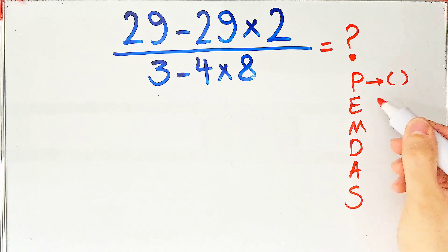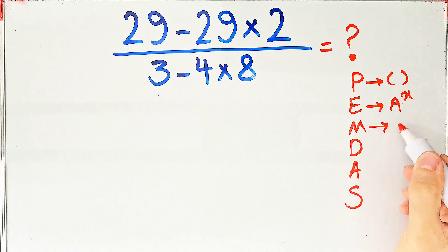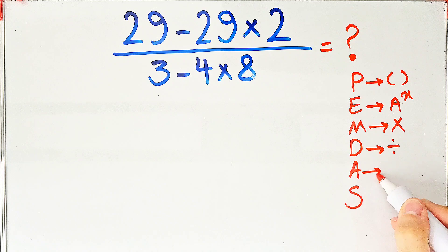In this rule, P stands for parentheses, E stands for exponent, M stands for multiplication, D stands for division, A stands for addition, and S stands for subtraction.